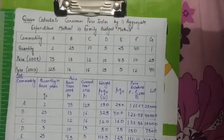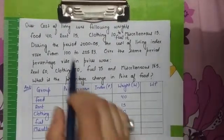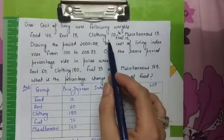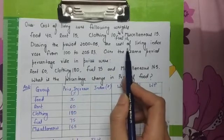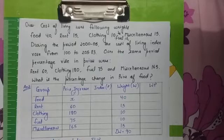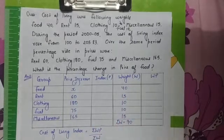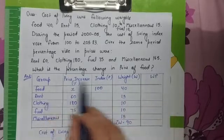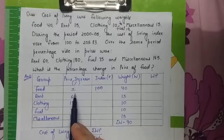The next question is similar to what Delhi University students get in their exam. You need to calculate the cost of living using the following weights: Food=40, Rent=15, Clothing=10, Fuel=10, Miscellaneous=15. During the period 2000 to 2005, the cost of living index rose from 100 to 205.83. Over the same period the percentage rise in prices were: Rent increased by 60%, Clothing by 180%, Fuel by 75%, and Miscellaneous by 165%. The percentage change in the price of food is not given and must be calculated.